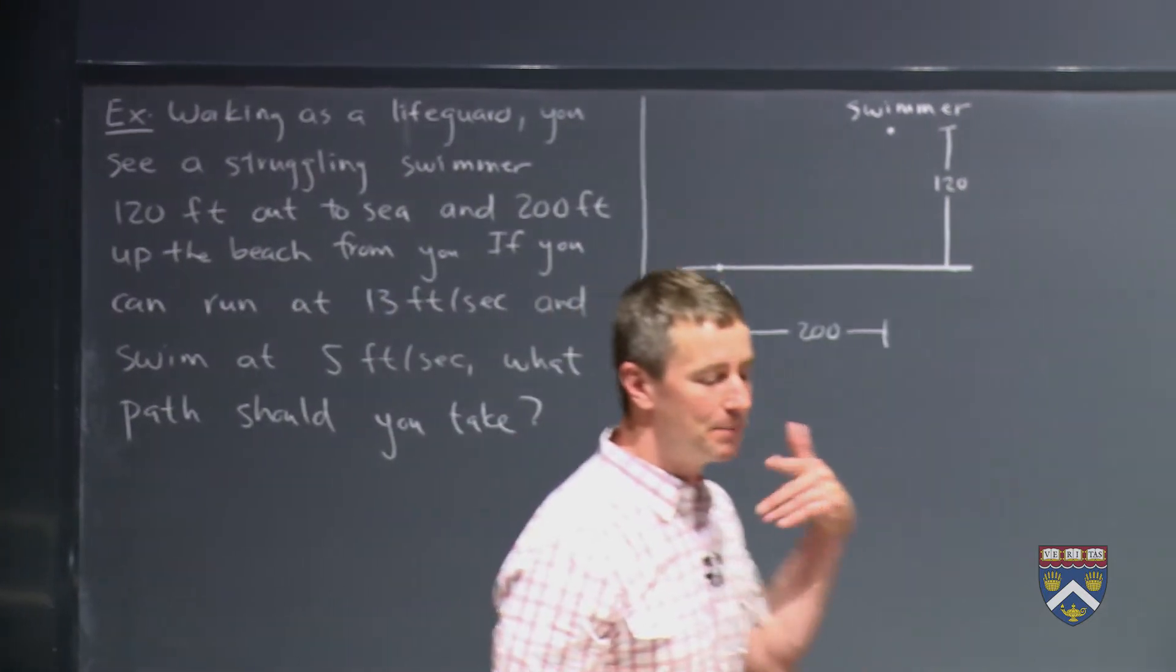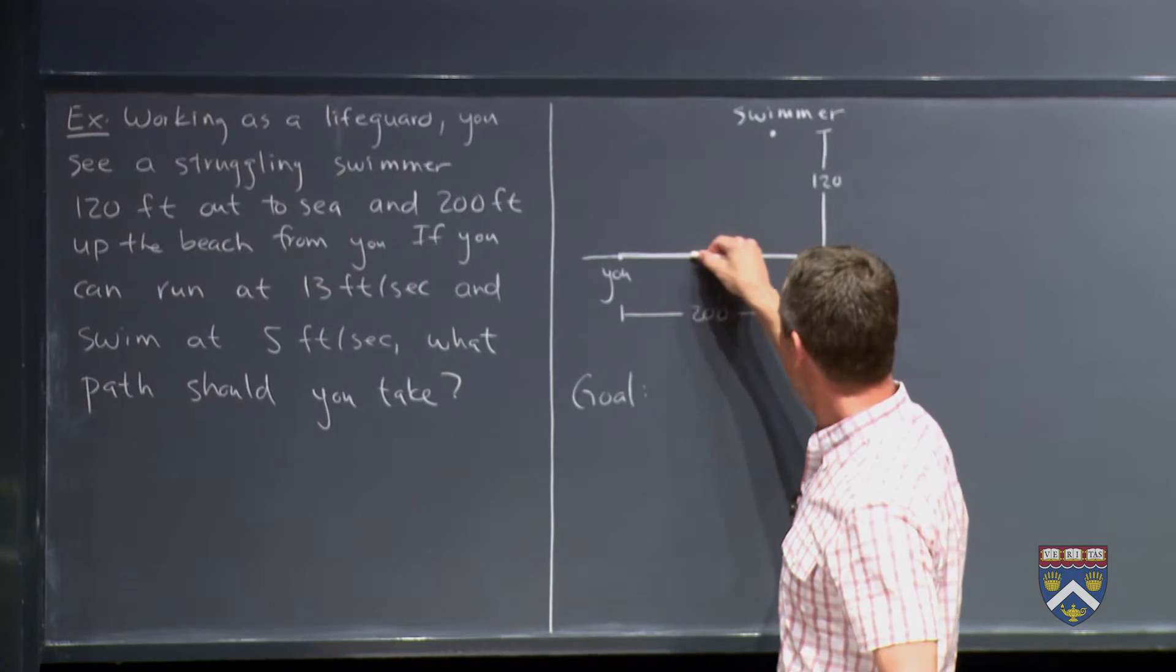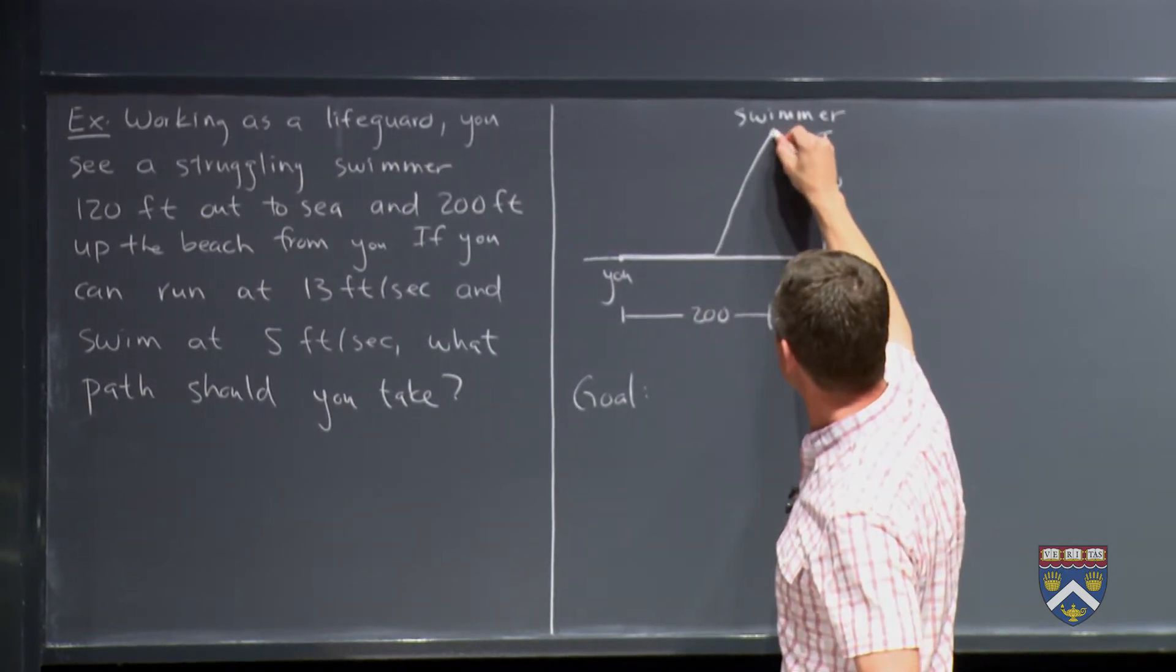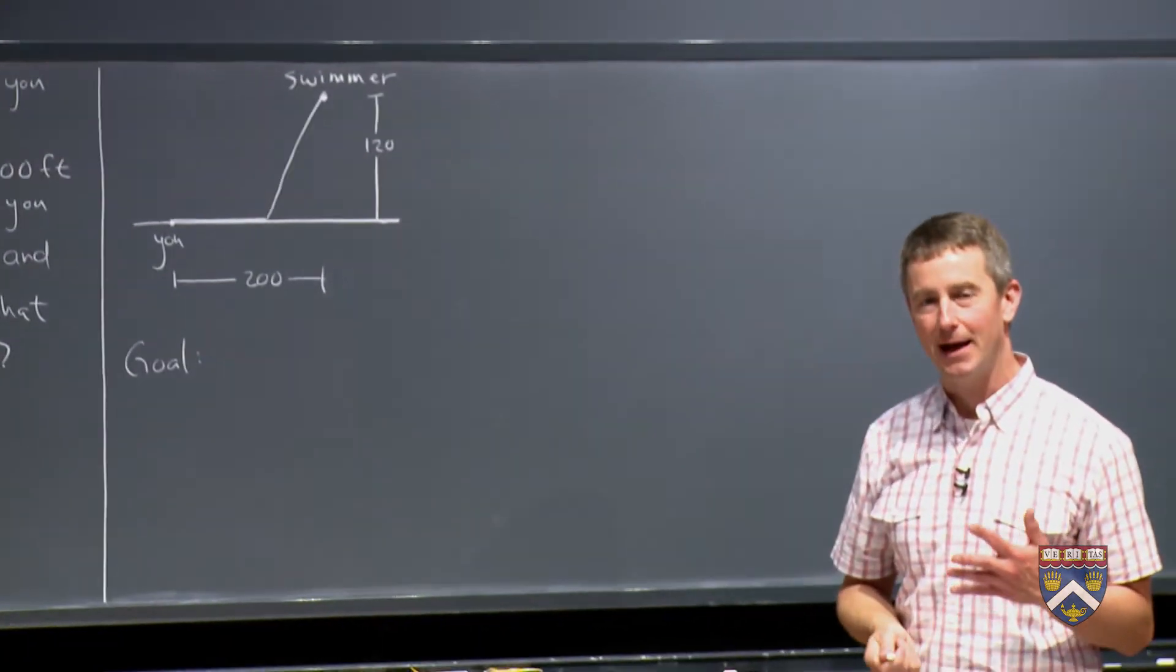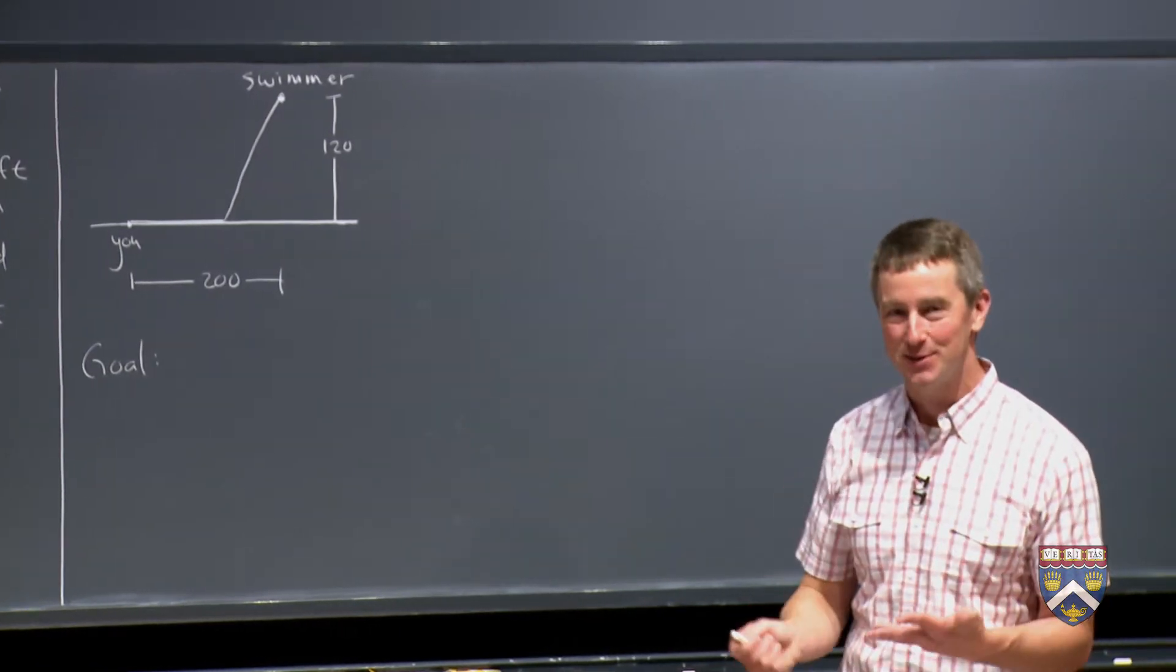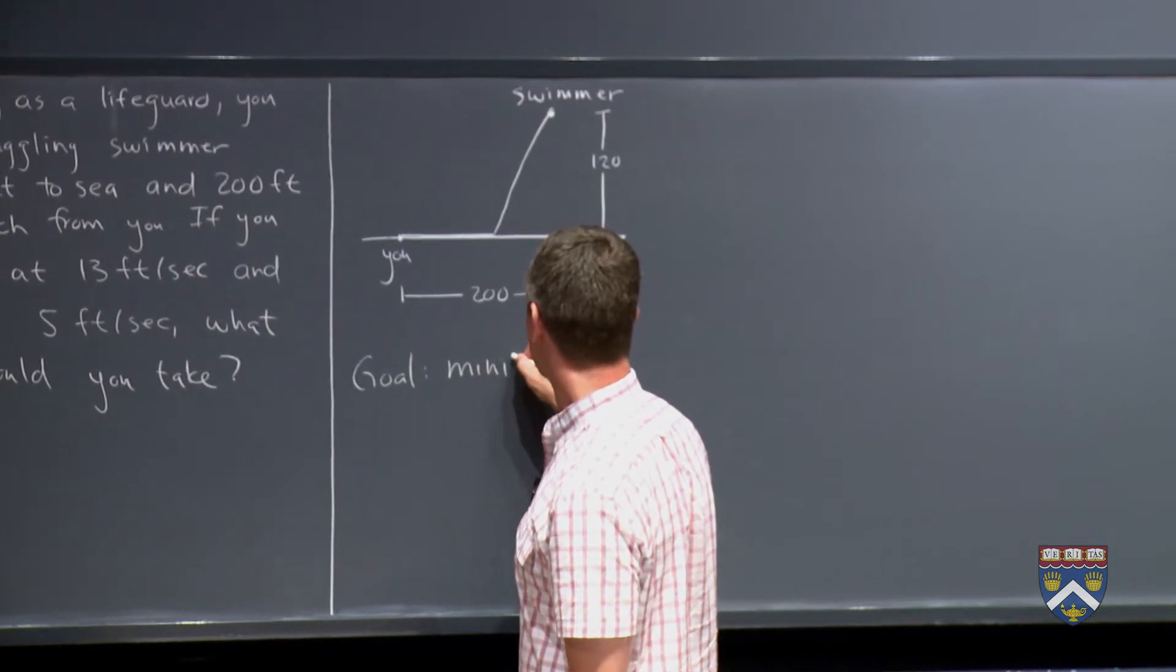Meaning it might make more sense to first run some distance on the beach and then get into the water and swim towards the swimmer. Because the goal is not to minimize distance. The goal is to get to the swimmer as soon as possible. Your goal is to minimize time.